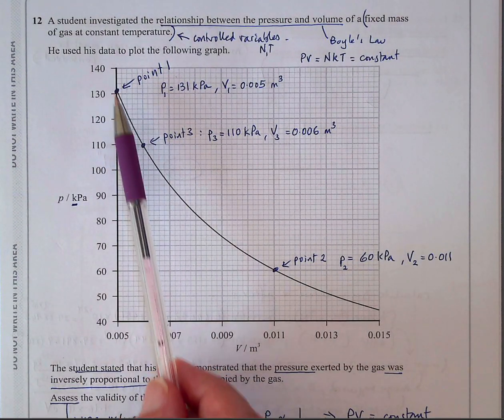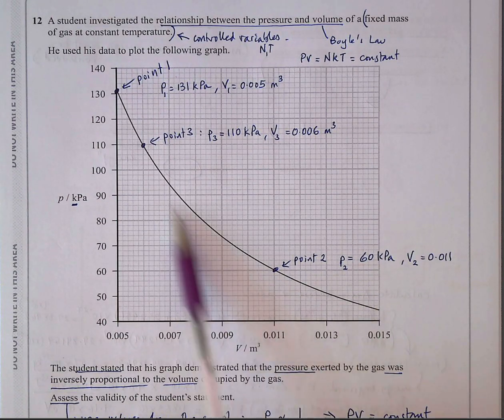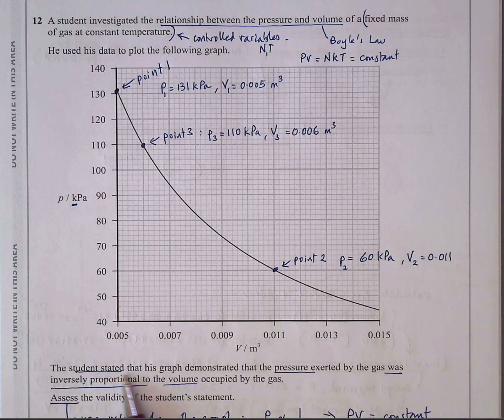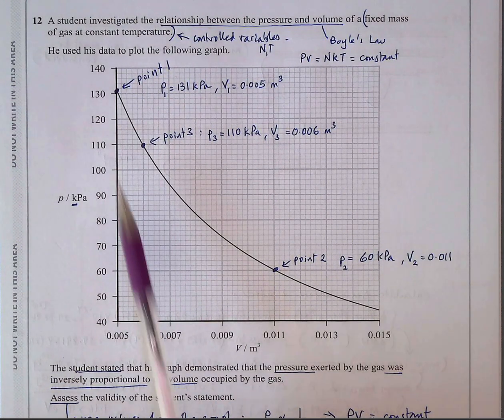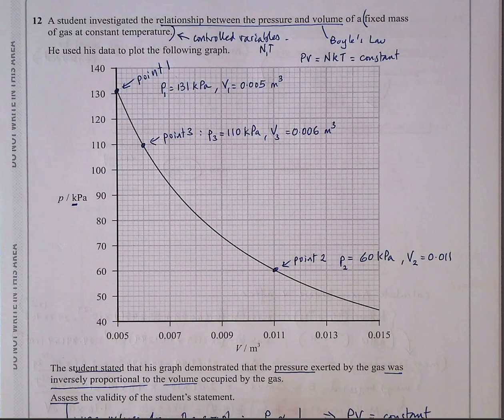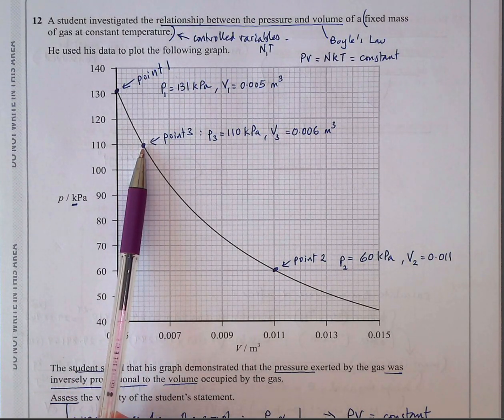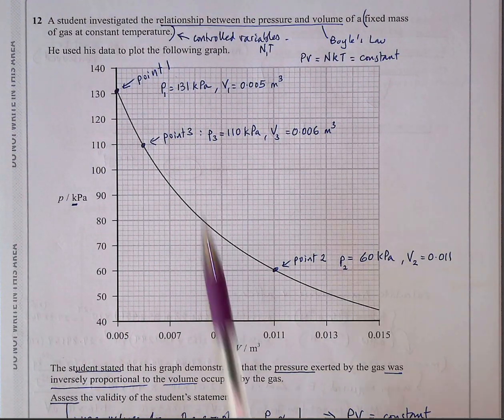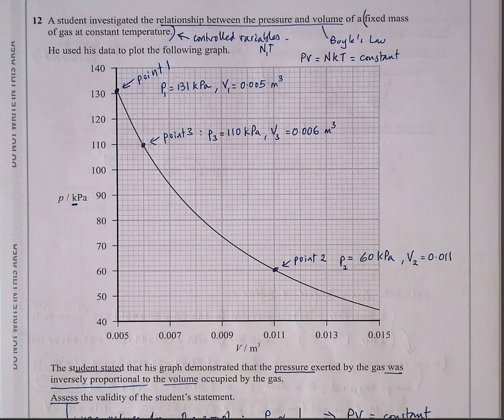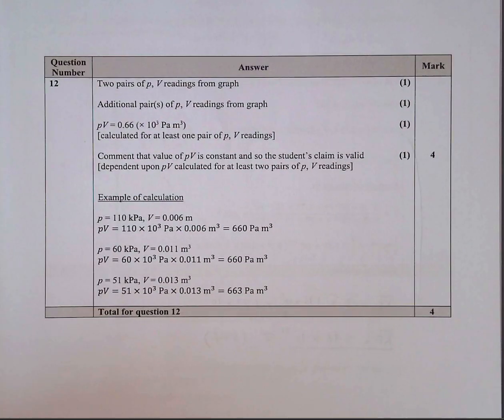As you increase the pressure, the volume decreases. So the students say that this graph demonstrated the pressure exerted by the gas was inversely proportional to the volume of the occupied gas. Assess the validity of the student's statement. Well, from this graph, the only way you can do that is to say, well, if P is proportional to 1 over V, PV must be a constant. And you could take 1, 2, and the examiner's done 3 points. I think these are the examiner's points. So you put those values in and you do those calculations.